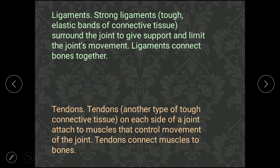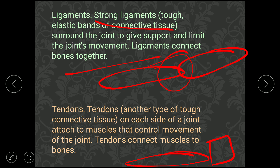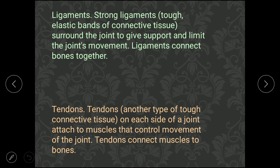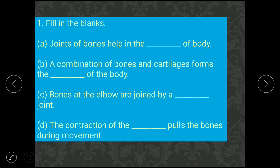Two important things are ligaments and tendons. A ligament is a strong, tough elastic band of connective tissue surrounding a joint that gives support and limits joint movement — ligaments connect bone to bone. A tendon is another type of tough connective tissue that attaches muscles to bones on each side of a joint to control movement — tendons connect muscles to bones.